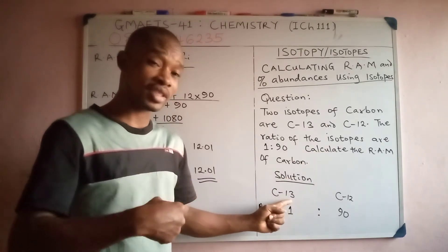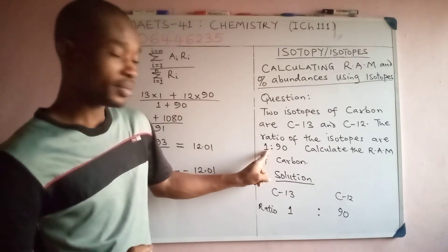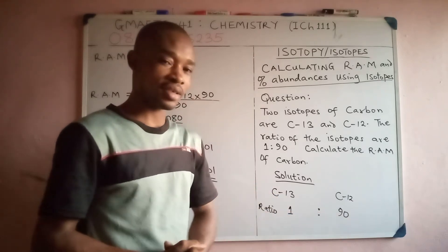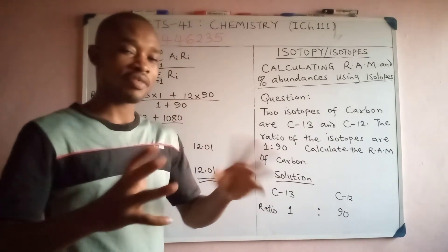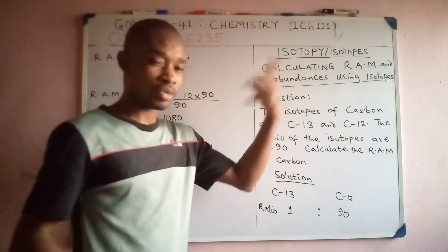Carbon-13, that is carbon with mass number 13, has the ratio 1. You can see, then carbon of mass number 12 has a ratio 90. When ratio is given, usually it's given in order of the arrangement of the original quantities.